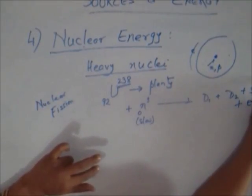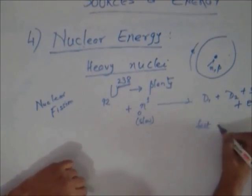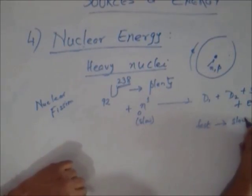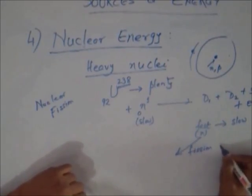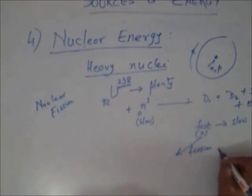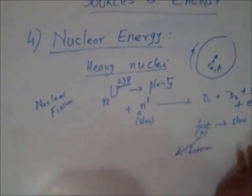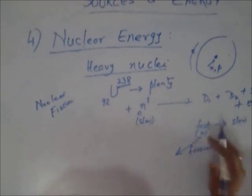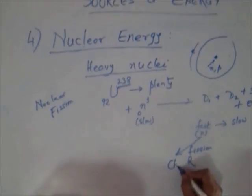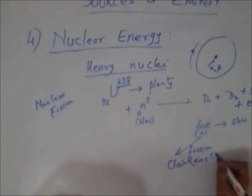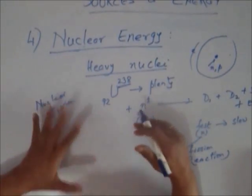Three neutrons are also generated and they are fast. If you can convert these fast neutrons into slow neutrons by taking away their energy, then these neutrons can again cause fission in further uranium nuclei. So one fission may cause three, three may cause nine, nine may cause 27 - and this is called a chain reaction.